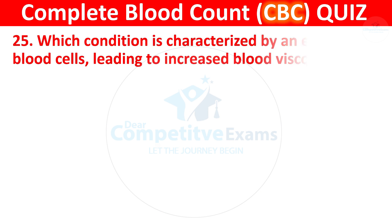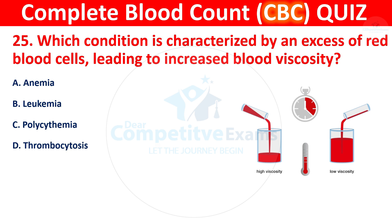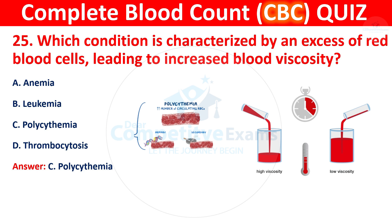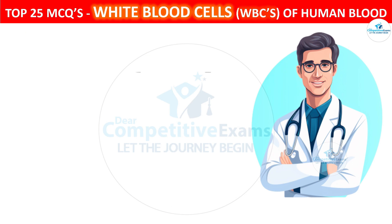Question 25: Which condition is characterized by an excess of red blood cells leading to increased blood viscosity? The options are anemia, leukemia, polycythemia, or thrombocytosis. The correct answer is C, polycythemia. Polycythemia is a condition marked by an excess of red blood cells, which can result in increased blood viscosity and potential circulation problems.